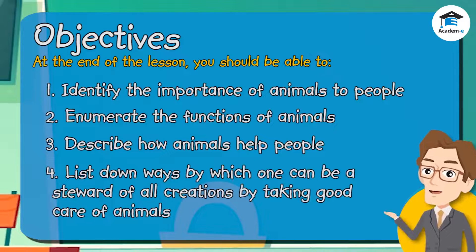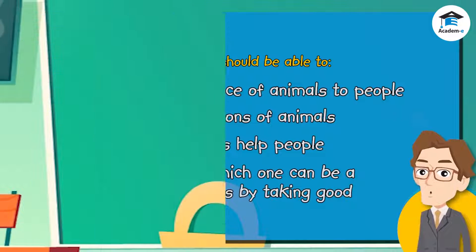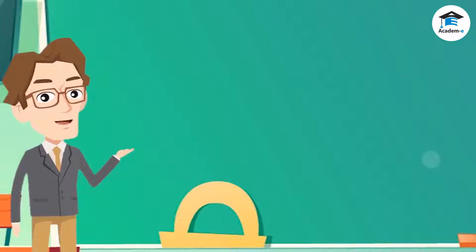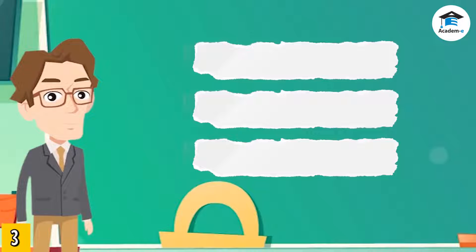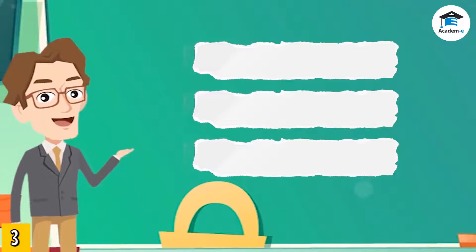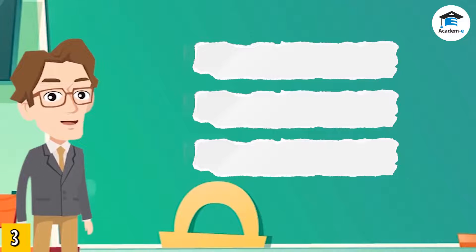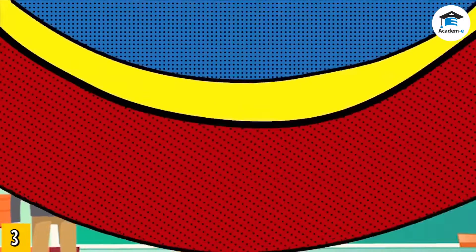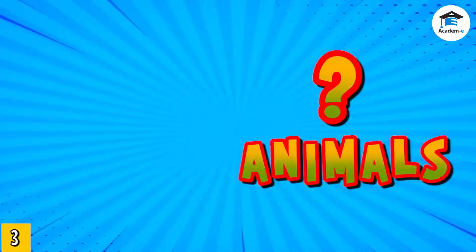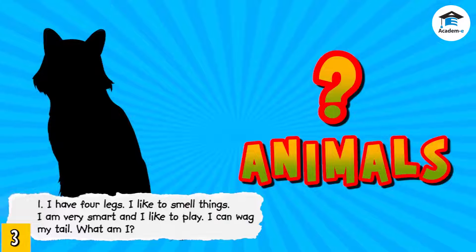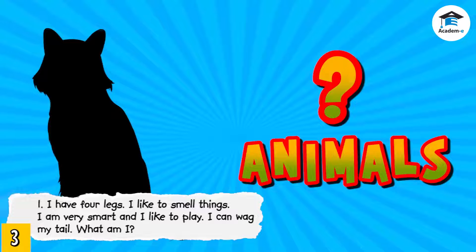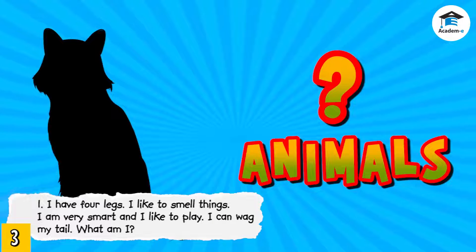Today we're going to play a guessing game. I have here three strips of paper. I will read what is written on a strip of paper and you're going to guess the animal described in each item. Are you ready? Number one: I have four legs, I like to smell things, I am very smart and I like to play, I can wag my tail. What am I?